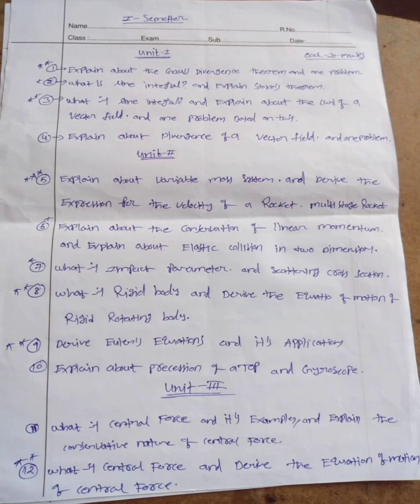Unit 2: only explain about variable mass system and derive the expression for the velocity of a rocket, multistage rocket. Explain about the conservation of linear momentum and explain about the elastic collision in two dimensions.